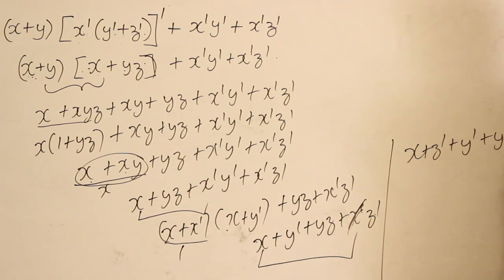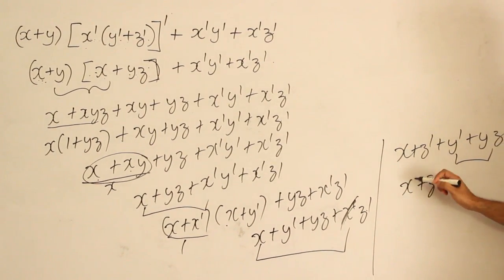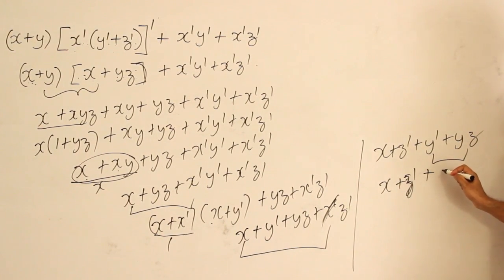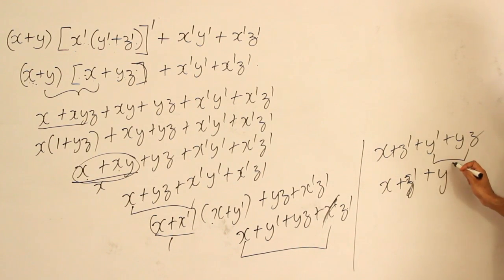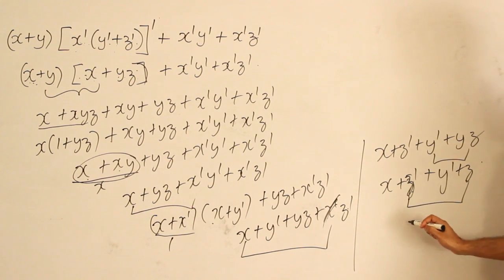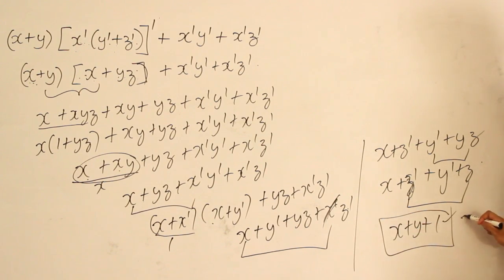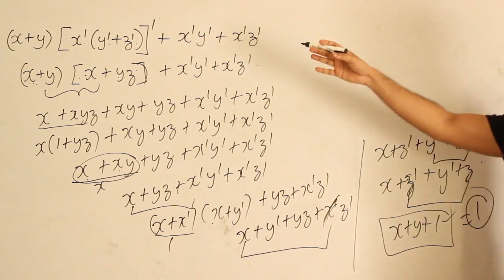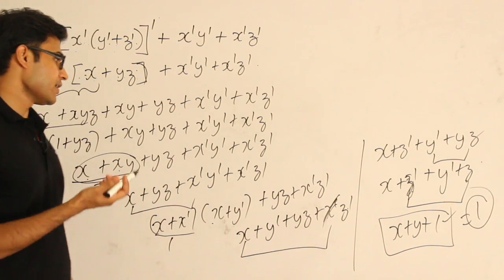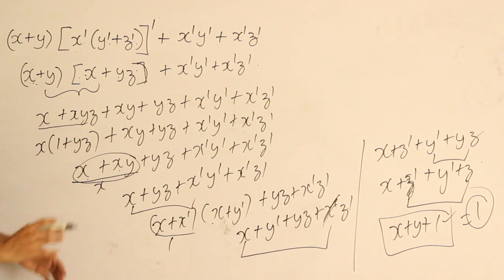Combining x + y' with yz + x'z': we get x + z' from combining some terms, then x + z' + y' + yz. Combining y' + yz gives y' + z, and combining z' + z gives 1. Therefore the expression becomes x + y' + 1, which is simply 1. The entire expression simplifies to 1. This was the longest route — with practice you can find a shortcut directly.